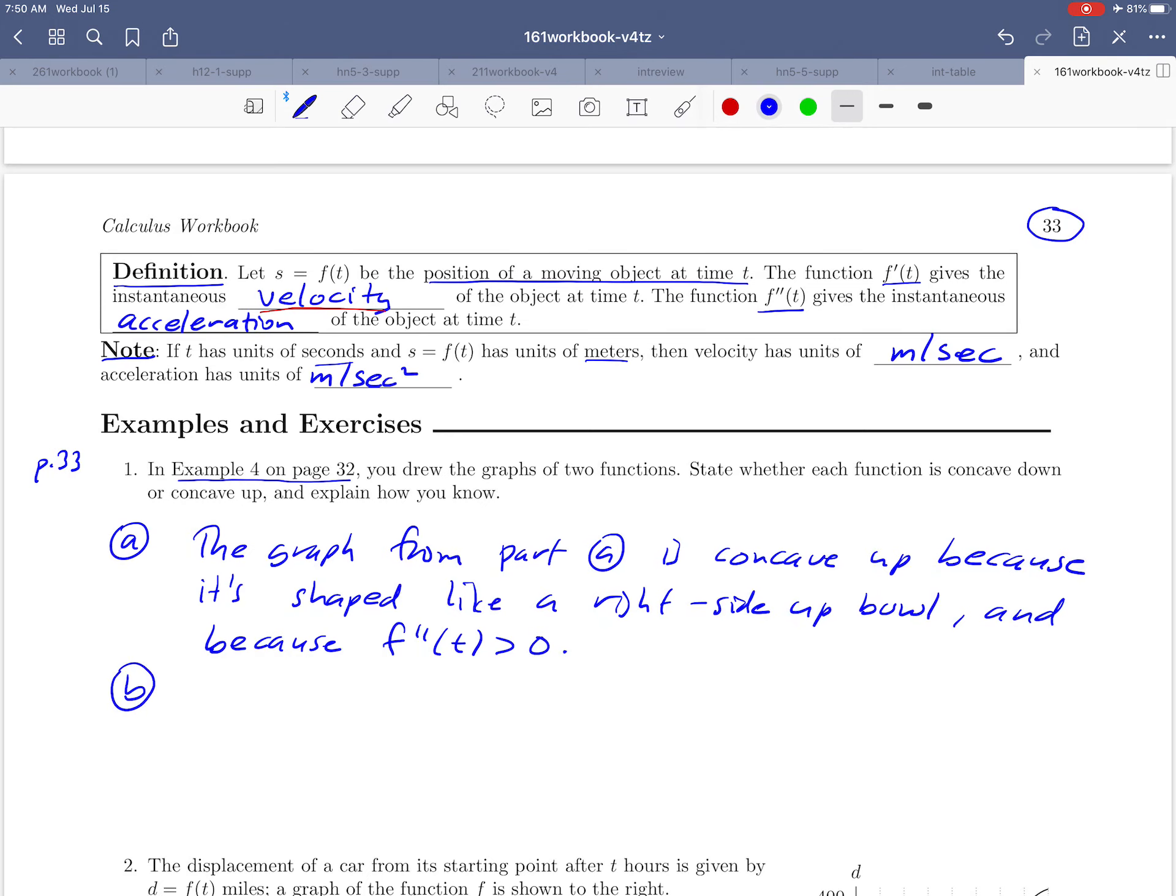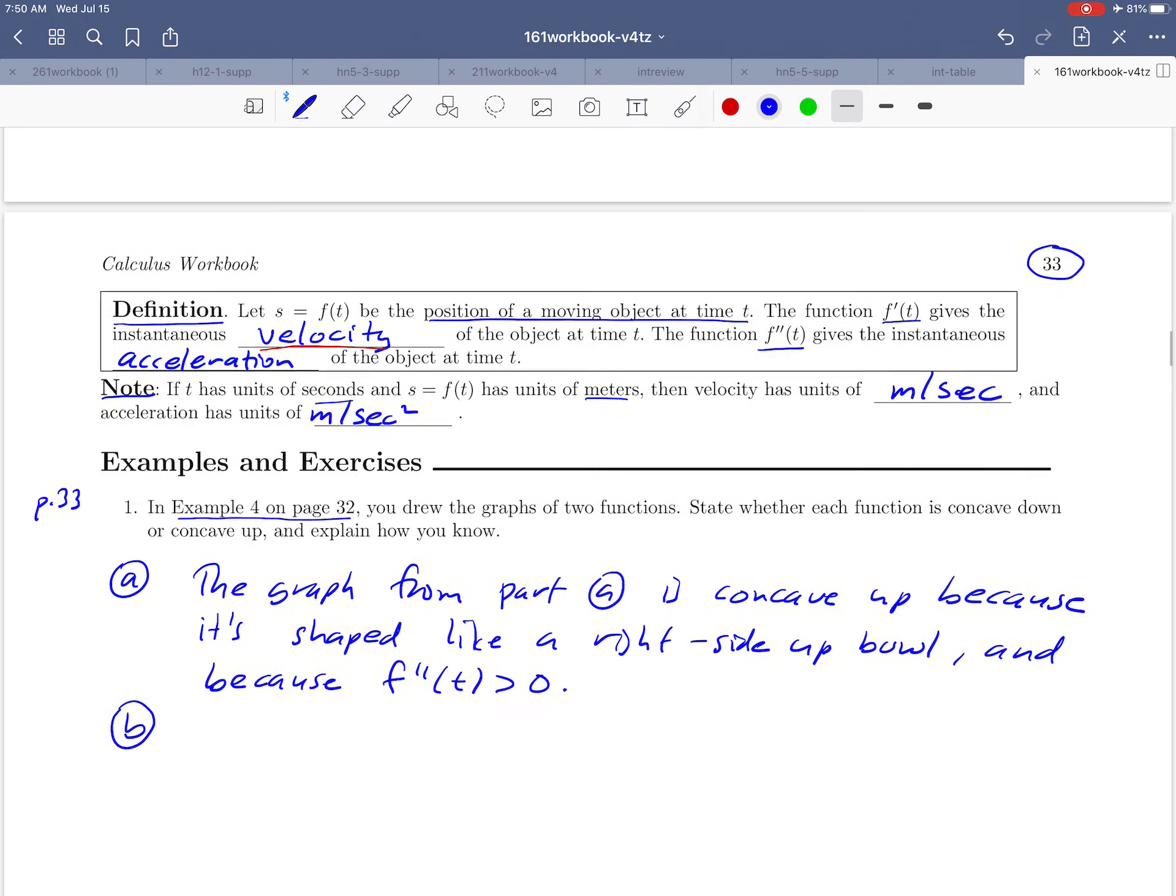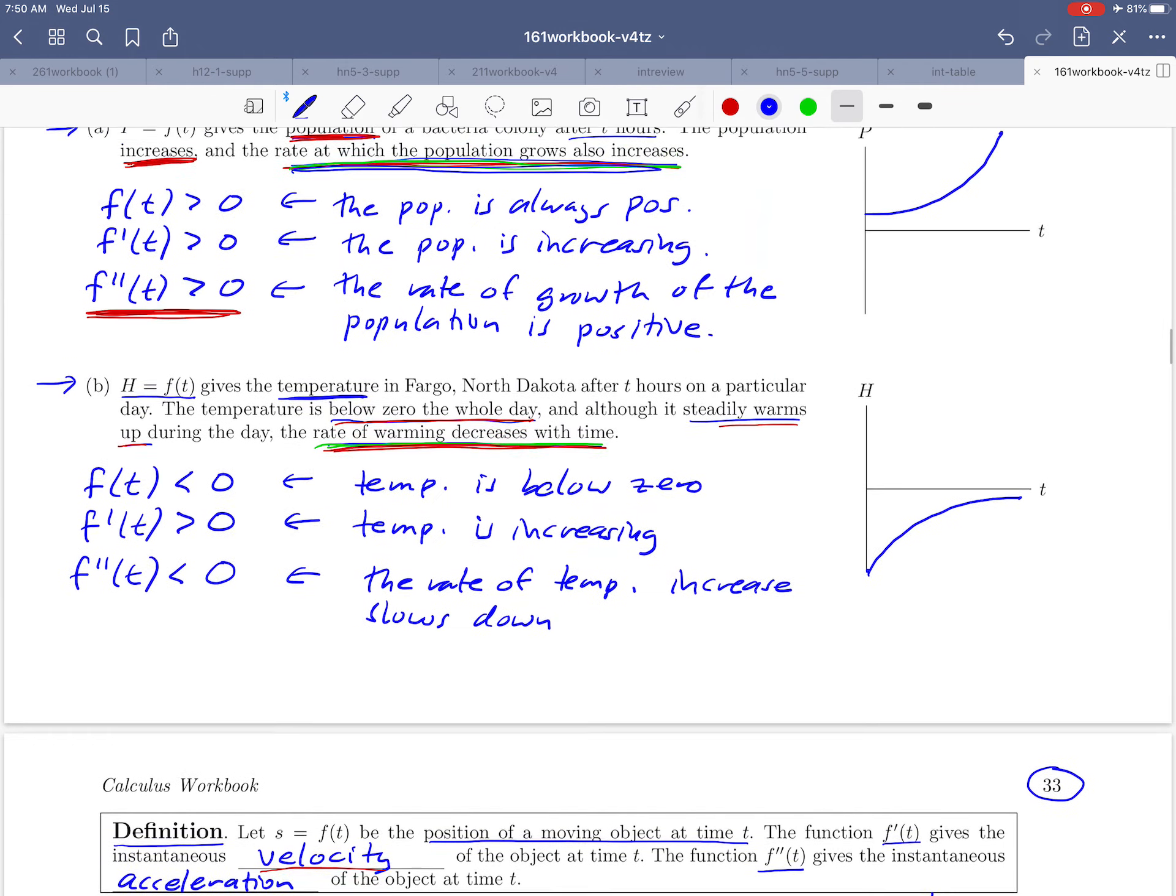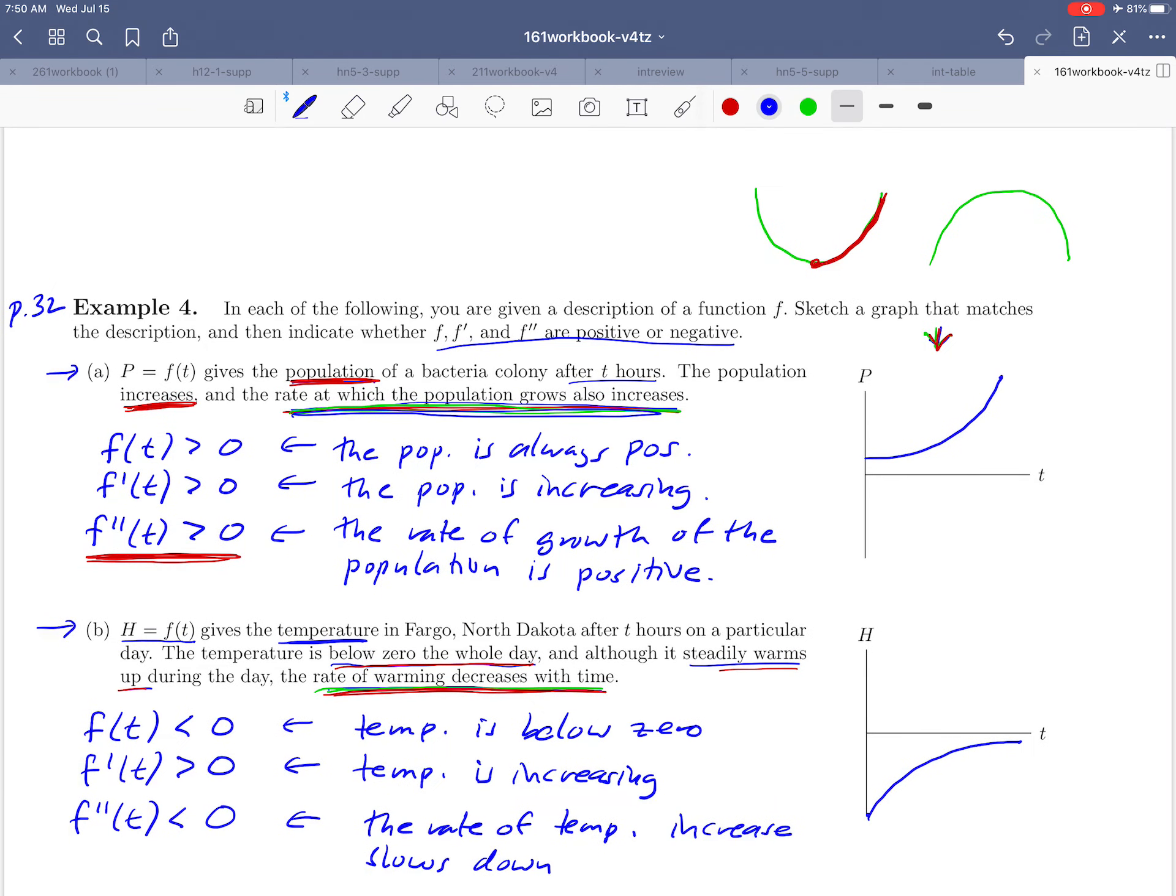Okay and what about the graph in B? All right well let's scroll back up and see if we can answer that question. So let's think graphically again. So if we look at the graph in part B here, does that look like part of a right side up or an upside down bowl to you?